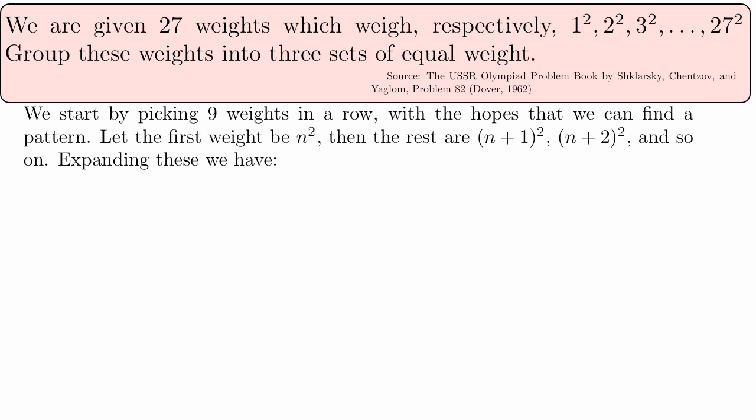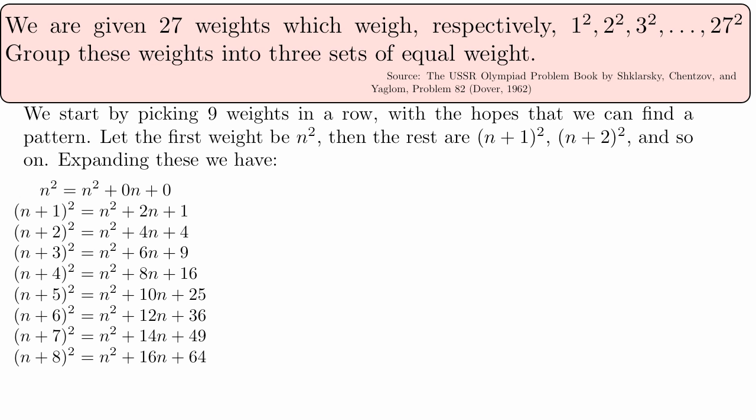If we have 9 weights, let the first weight be called n squared, and the rest are going to be n plus 1 squared, n plus 2 squared, and so on, until we have n plus 8 squared. That's going to give us a total of 9 different weights, and this is what they look like when they're expanded out, when we actually square the binomials that result.